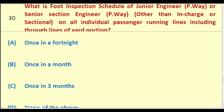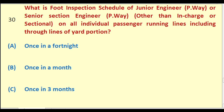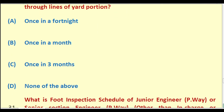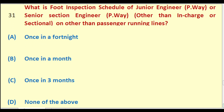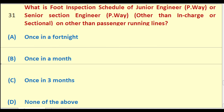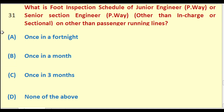What is the foot inspection schedule of Junior Engineer Permanent Way other than in charge or sectional, on other than passenger running lines? Options: once in a fortnight; once in a month; once in three months; none of the above. The right answer is: once in three months.